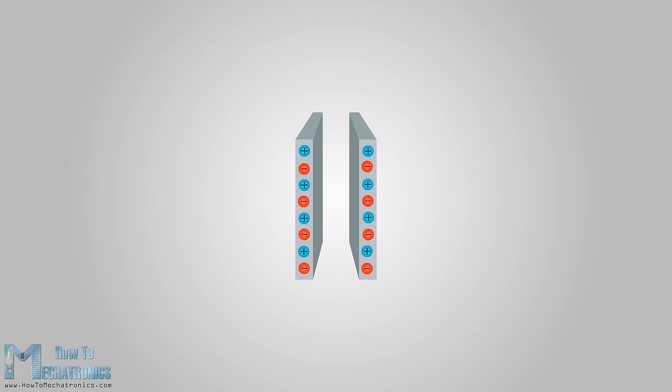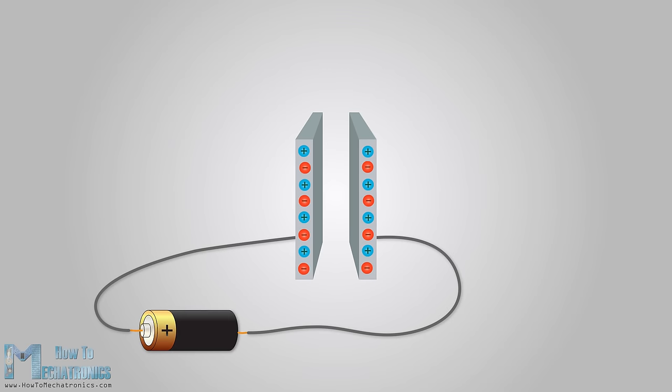First, we can note that a metal typically has an equal amount of positively and negatively charged particles, which means it's electrically neutral. If we connect a power source or a battery to the metal plates of the capacitor, a current will try to flow, or the electrons from the plate connected to the positive lead of the battery will start moving to the plate connected to the negative lead of the battery.